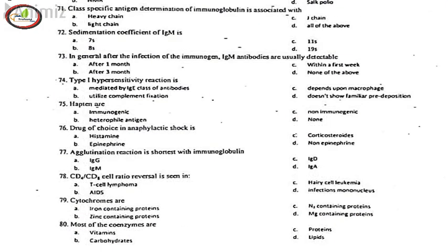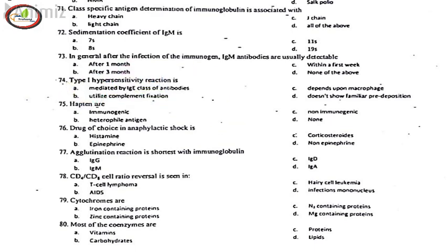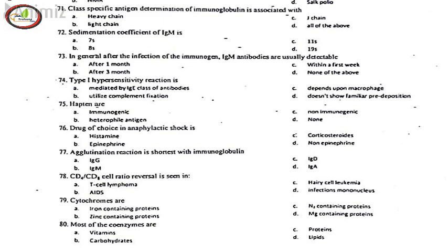71. Class specific antigen determination of immunoglobulin is associated with, A. Heavy chain. 72. Sedimentation coefficient of IgM is, D. 19S. 73. In general after the injection of the immunogen, IgM antibodies are usually detectable, C. within the first week. 74. Type 1 hypersensitivity reaction is, A. mediated by IgE class of antibodies. 75. Hapten, C. Nonimmunogenic. 76. Drug of choice in anaphylactic shock is, D. Norepinephrine. 77. Agglutination reaction is strongest with immunoglobulin, B. IgM. 78. CD4/CD8 cell ratio reversal is seen in, B. AIDS.